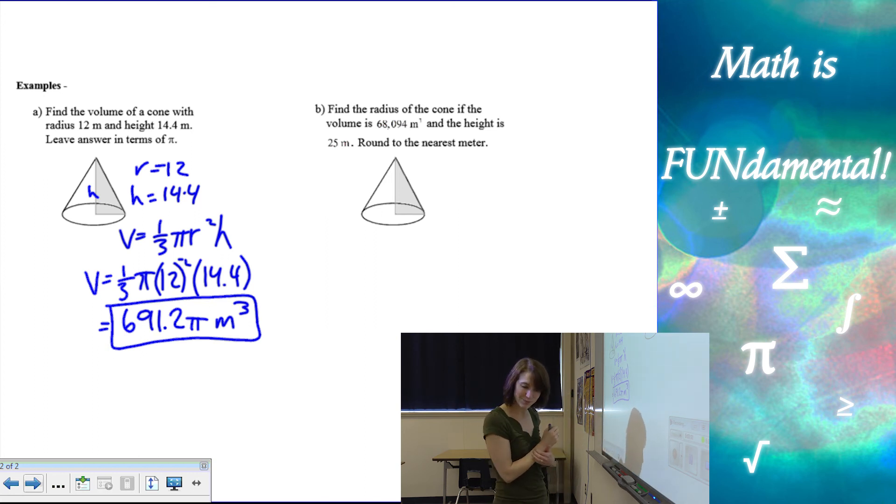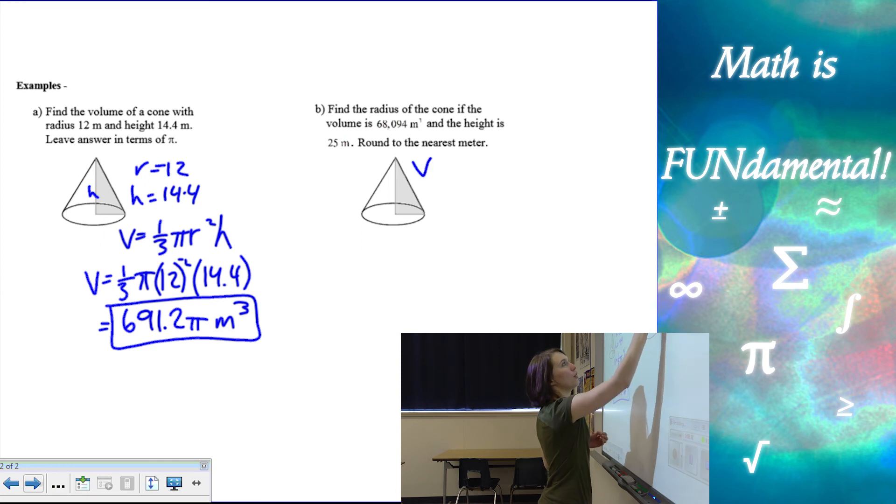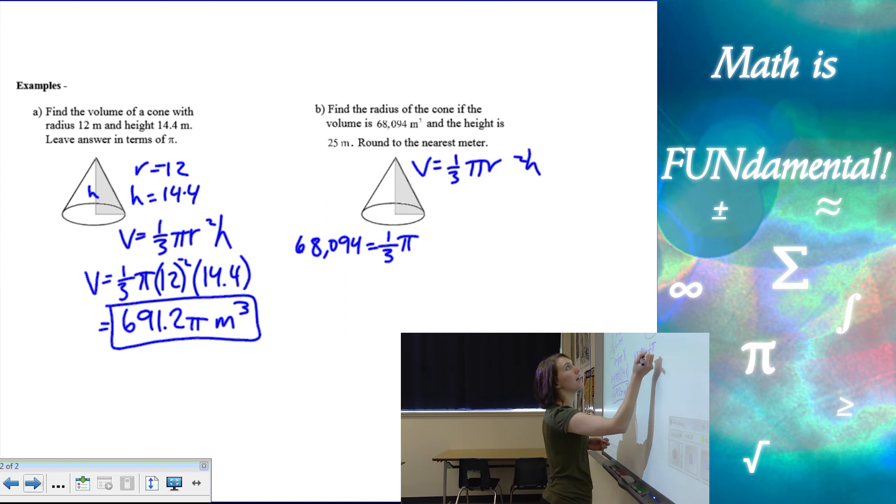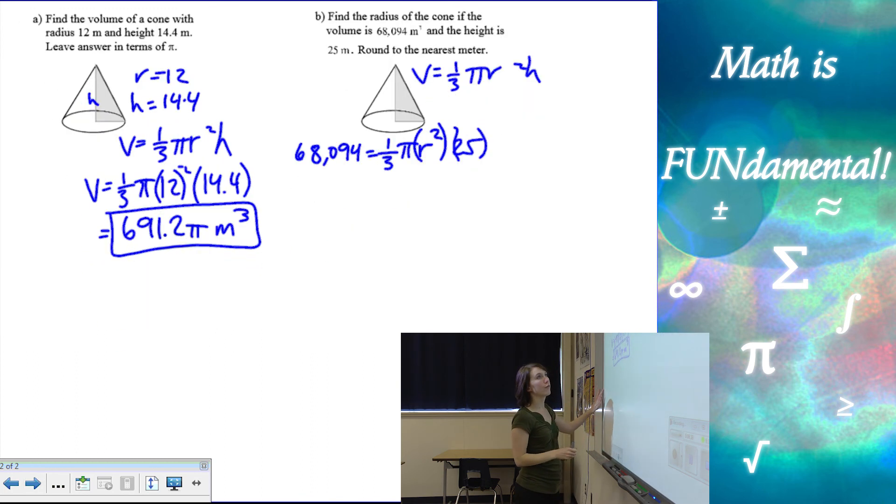All right, and our last example, we have find the radius of the cone if the volume is 68,094 meters cubed and the height is 25 meters. So in this case, we're going to have to go backwards a little bit. So I know that volume is 1/3 π r² h. So if my volume is 68,094, that has to equal 1/3 π times the radius squared times my height, which is 25. So we have to solve for the radius.